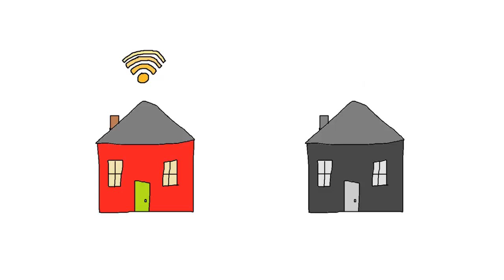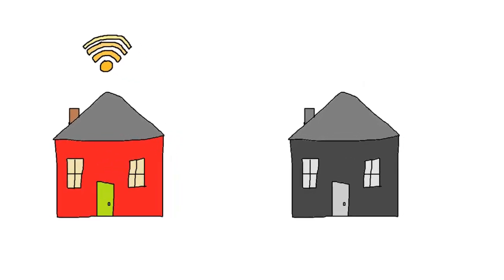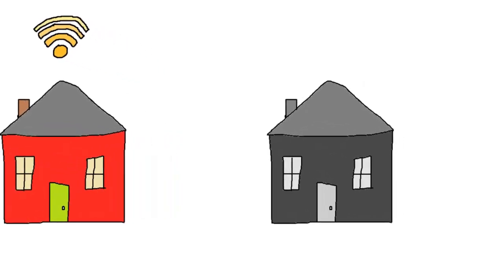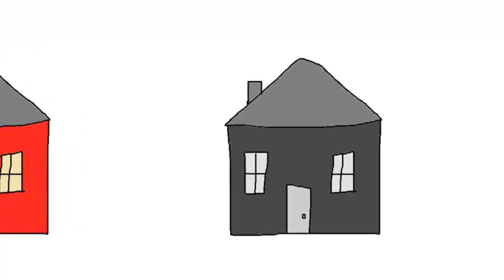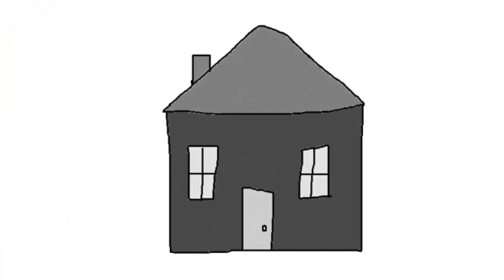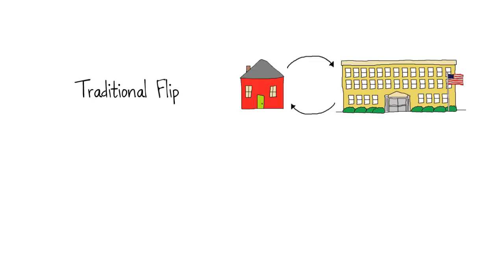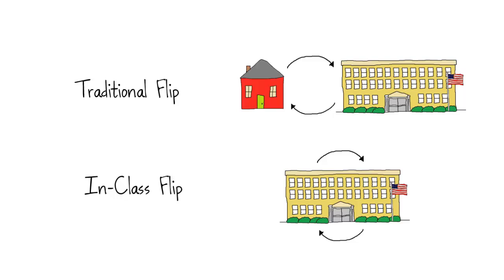Access isn't the only problem. Some homes aren't conducive to the kind of learning that a traditional flip requires. Although districts are working on creative solutions to address these challenges, an in-class flip provides another alternative. Whereas a traditional flip depends heavily on things going right at home, the in-class flip keeps all parts of the flip at school, thus assuring that more students get the benefits of the flipped concept.